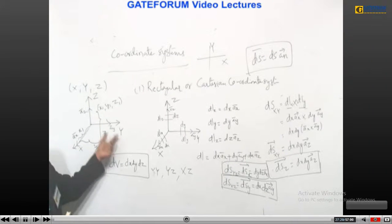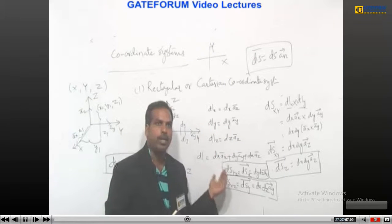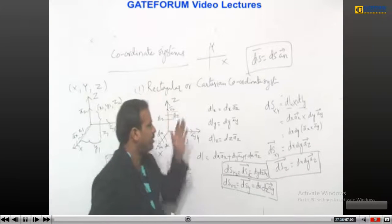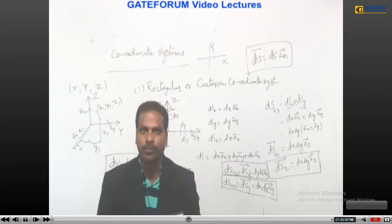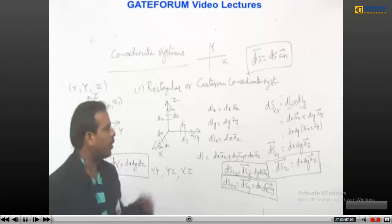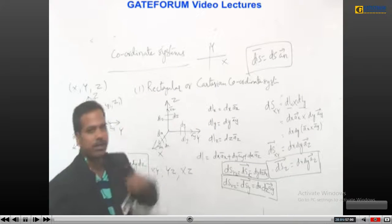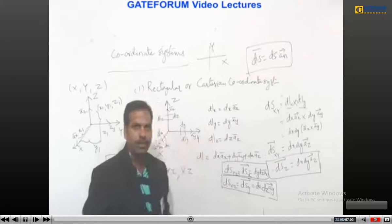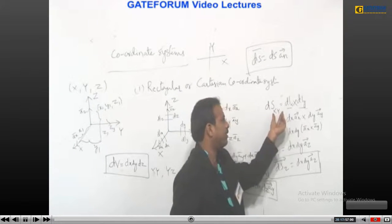The unit vectors along x, y, z are āx, āy, āz. We look at differential length elements, surface elements, and volume elements for the rectangular coordinate system. The application of these elements: when we know the charge distribution in a smallest length, surface, or volume, we can evaluate the total charge present in the entire region using these differential elements.